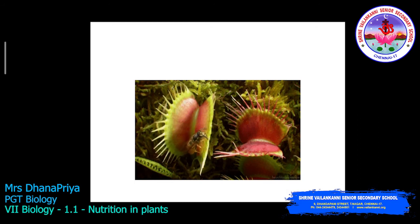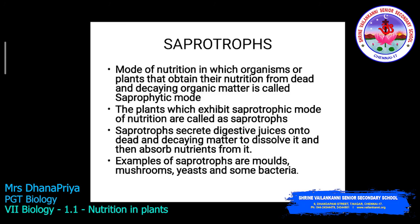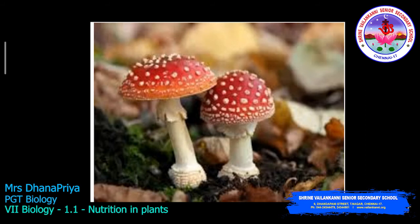This is another mode of heterotrophic nutrition: saprophytic nutrition. In this mode, organisms or plants that obtain nutrition from dead and decaying organic matter are called saprotrophs. Saprotrophs secrete digestive juices onto dead and decaying matter to dissolve it and then absorb the nutrients from it. Examples of saprotrophs are mold, mushroom, yeast, and some bacteria.